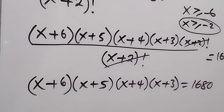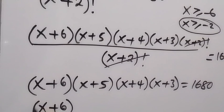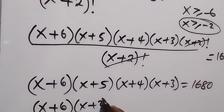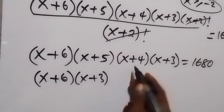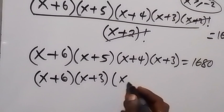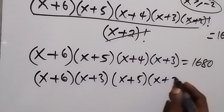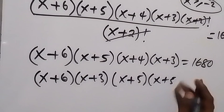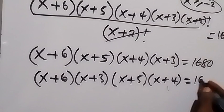Let's bring (x+6) and (x+3) together, and separate (x+5) times (x+4). So we have [(x+6)(x+3)] times [(x+5)(x+4)] equals 1680.